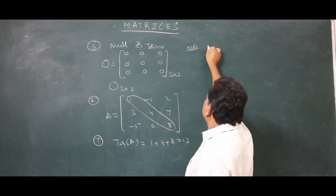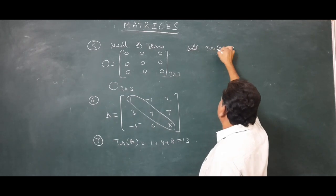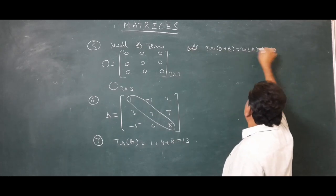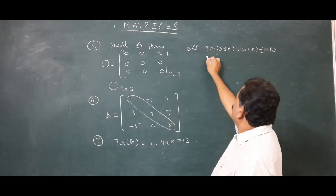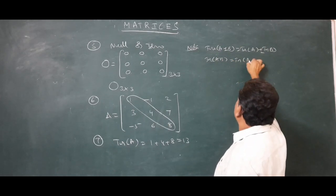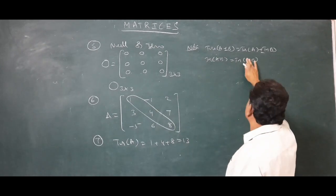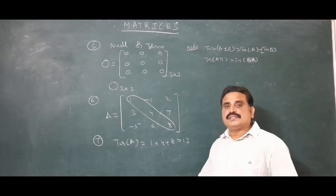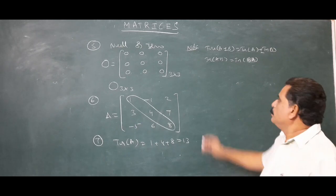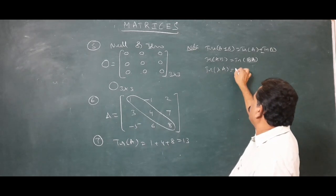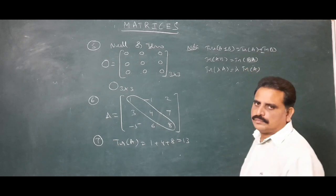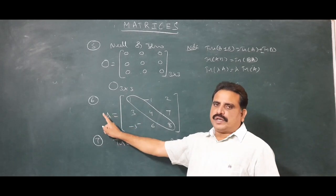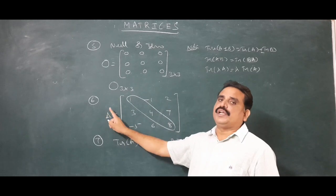Properties of trace: tr(A + B) = tr(A) + tr(B); tr(A - B) = tr(A) - tr(B). Also, tr(AB) = tr(BA) — even though AB is generally not equal to BA, their traces are equal. And tr(λA) = λ·tr(A), where λ is a scalar constant.